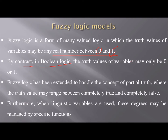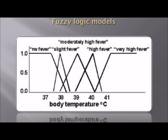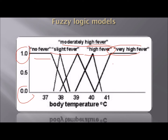In contrast, Boolean logic says variables can only have values of 0 and 1. Fuzzy logic has been extended to handle the concept of partial truth — the truth value may range between completely true (one) and completely false (zero). When linguistic variables are used, these degrees may be managed by specific functions. For example, a person can have no fever, slightly high fever, moderately high fever, high fever, or very high fever.